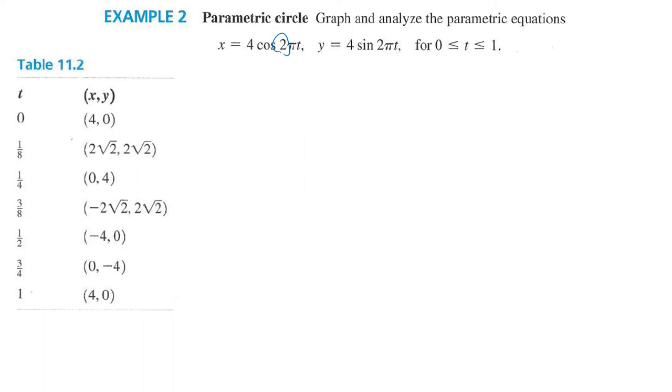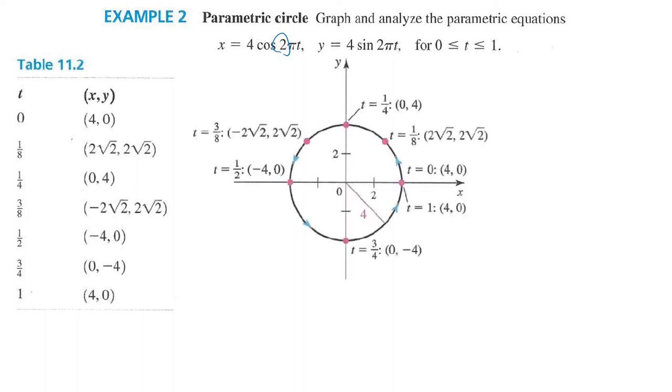And then from here, you can graph it to get that graph. So notice we started at that point right there, which is where we would normally start a circle. And we went in the correct direction that way around the circle. There's another example with a turtle walking around a circle. It's a word problem. I didn't put it in here, but you can see it in your pages.